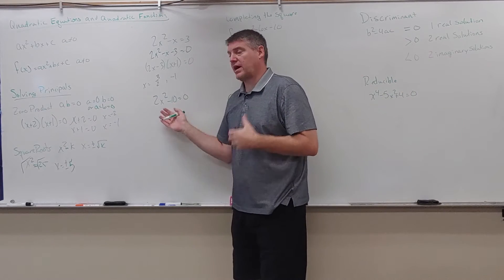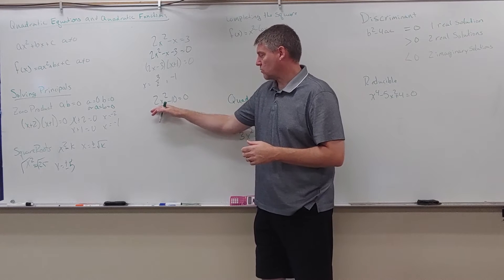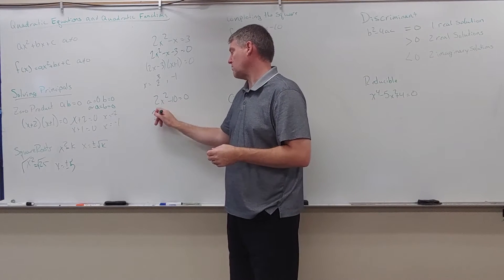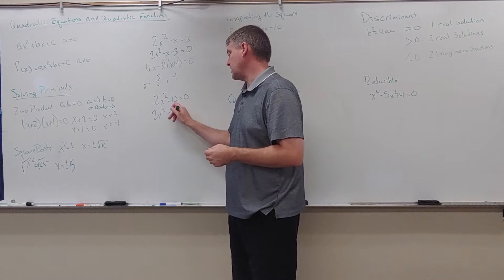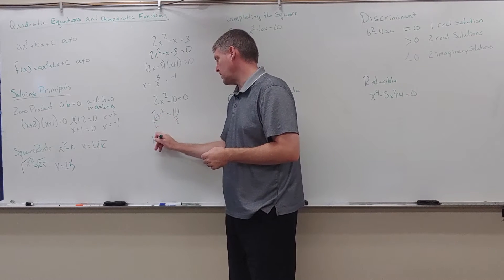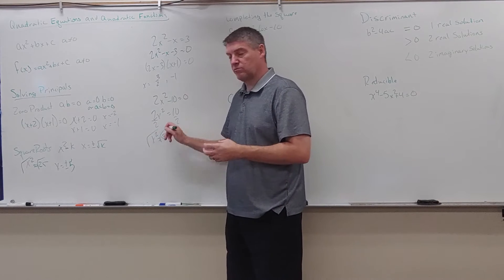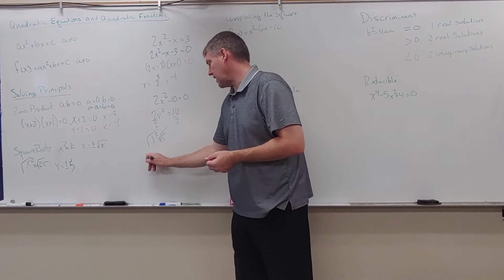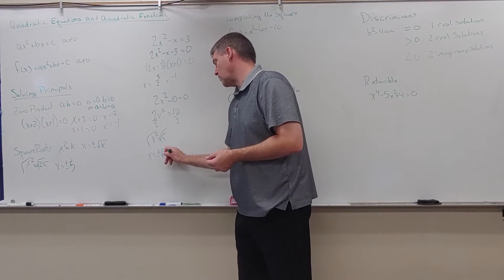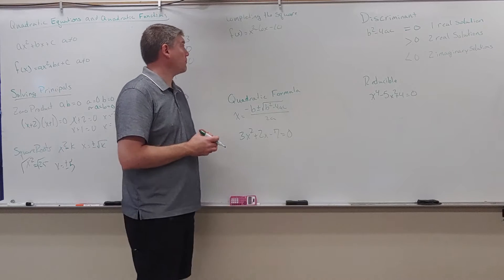On the second example, I don't have a linear component, just the quadratic. I move everything to the other side by adding 10 to the other side, then dividing by 2, giving me x squared equals 5. I square root both sides and get x equals plus or minus the square root of 5.